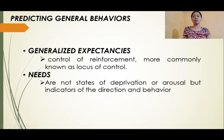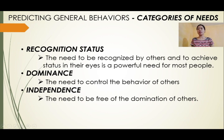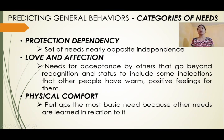Needs refer to functionally related categories of behaviors. Rotter listed six broad categories of needs, each related to behaviors that lead to the same or similar reinforcement. First, Recognition Status — the need to excel, to achieve, and to have others recognize one's worth. Second, Dominance — the need to control the behavior of others, to be in charge, or to gain power. Third, Independence — the need to be free from the domination of others. Fourth, Protection Dependence — the need to have others take care of us and protect us from harm. Fifth, Love and Affection — the need to be warmly accepted by others and held in friendly regard. Sixth, Physical Comfort — behaviors directed at securing food, good health, and physical security.